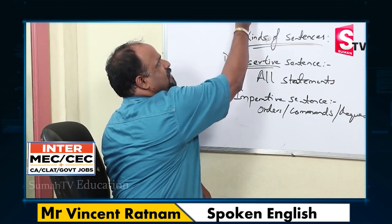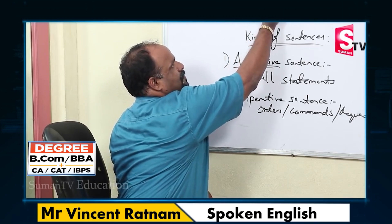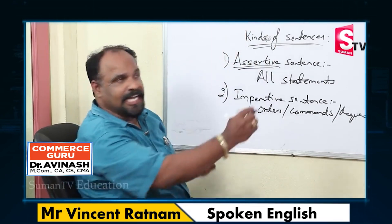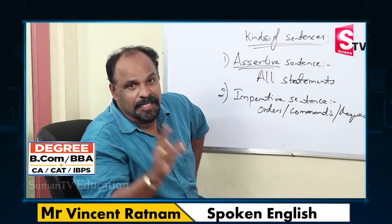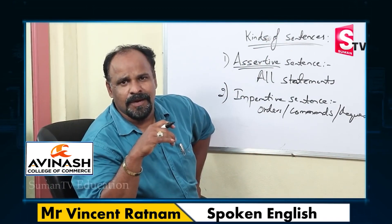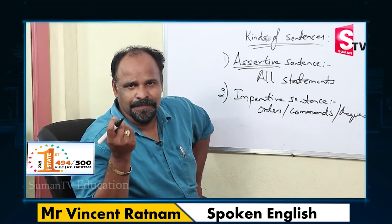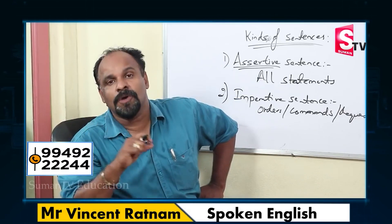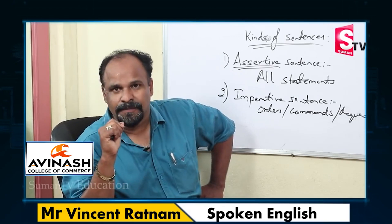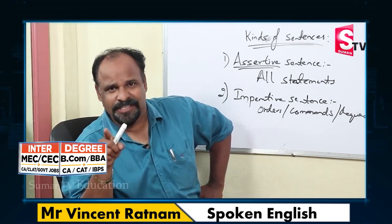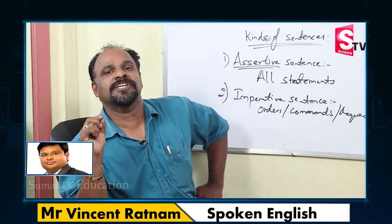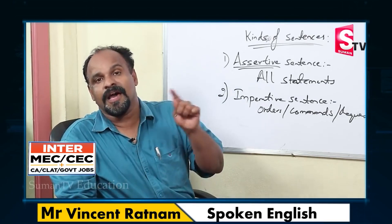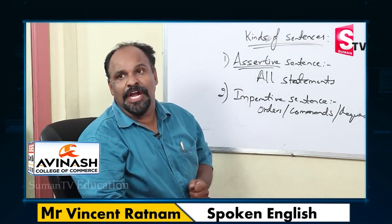The third kind is the interrogative sentence. An interrogative sentence is a question. For example: 'What is your name?' 'Do you think what you are talking is right?' 'How are you?' 'Where are you going?' These are all interrogative sentences — they are questions.